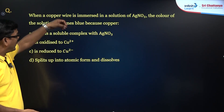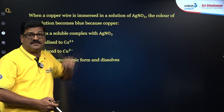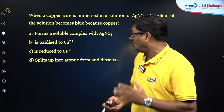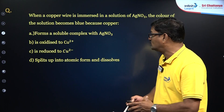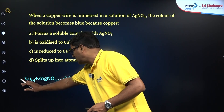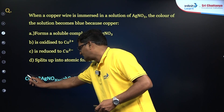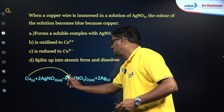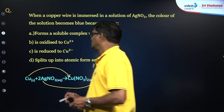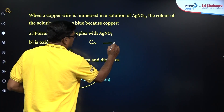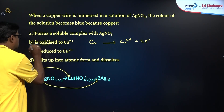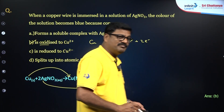Another question: when a copper wire is immersed in a solution of silver nitrate, the color of the solution becomes blue. Why? Because copper has a tendency to get oxidized, giving rise to Cu²⁺ ions, and silver ions are reduced to silver metal. So copper is oxidized to Cu²⁺ — this is an oxidation process; loss of electrons is an oxidation process. The answer is option B.